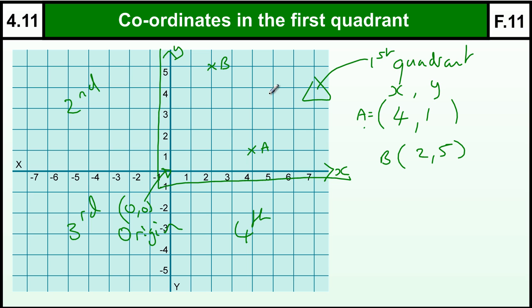If I'm trying to find the coordinate of a point that's already drawn, say point C, to get to C from the origin I need to go across five and up three. So the coordinate would be (5,3).